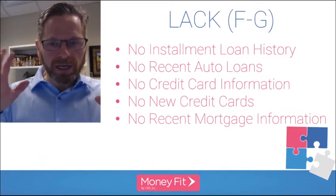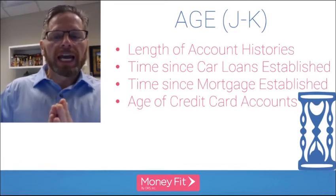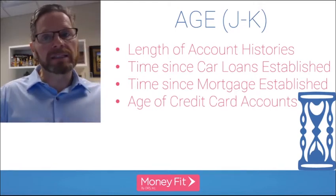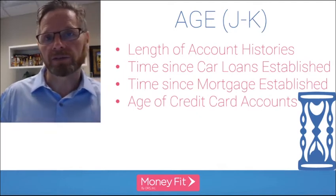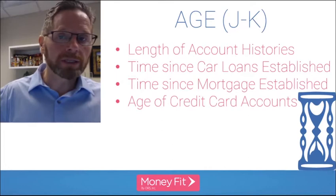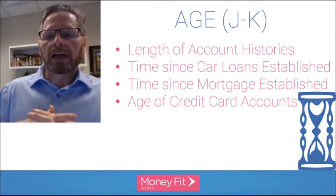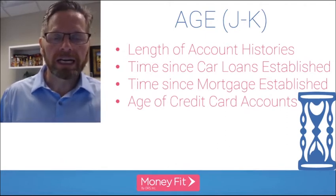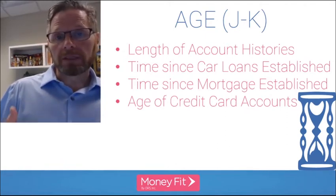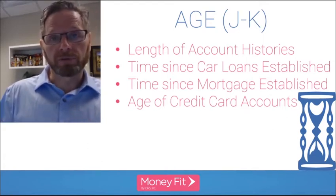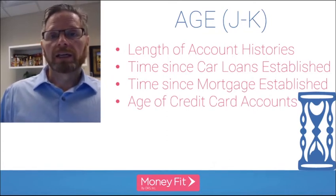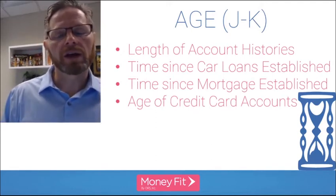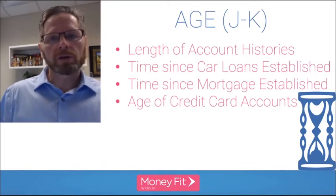Codes J and K have to do with age — how long you've had accounts and how long they've been open, or how long since they were opened. This covers length of account history, how long accounts have been reporting to your credit history, how long since you established a car loan or mortgage, and how old your credit card accounts are. While older accounts indicate stability and can help your credit, not having anything new means FICO has less reliable recent information.